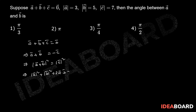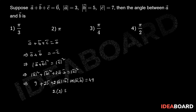Mod a⃗ is 3, so 3 squared is 9. Mod b⃗ is 5, so 5 squared is 25. Plus 2 into mod a⃗ into mod b⃗ into cos of the angle between a⃗ and b⃗ equals mod c⃗ squared. Mod c⃗ is 7, so 7 squared is 49. That gives 2 into 3 into 5 into cos(angle between a⃗, b⃗) equal to 49 minus 9 minus 25, which is 15.